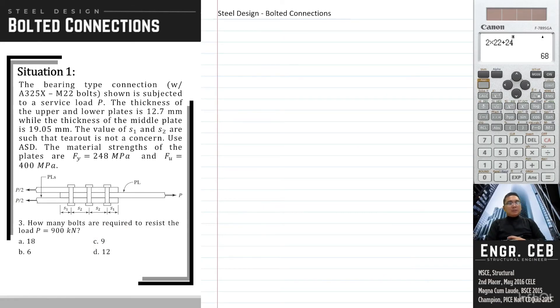Next, how many bolts are required to resist the load T equals 900 newton? So in order to determine the number of bolts, we must equate the demand to its capacity or to the capacity of the bolts. So aside from bearing and tear out, another limit state for bolts is the bolt shear. And the nominal strength for bolts here is simply equal to Fnv times Ab.